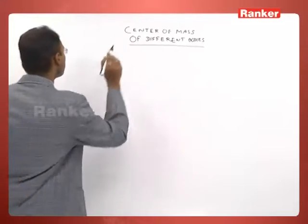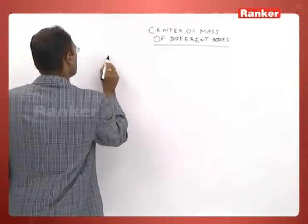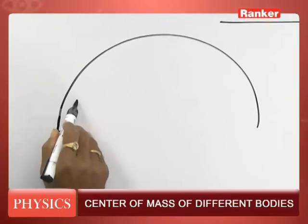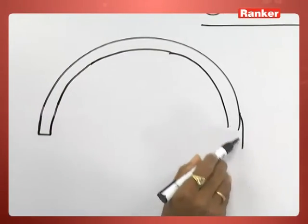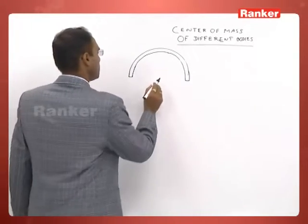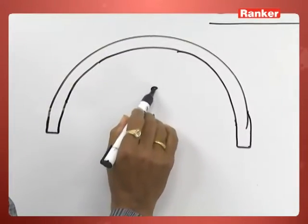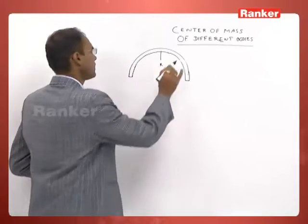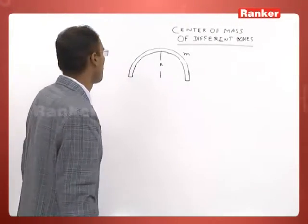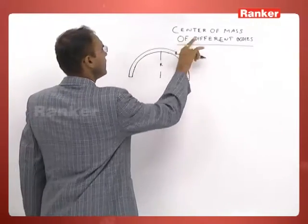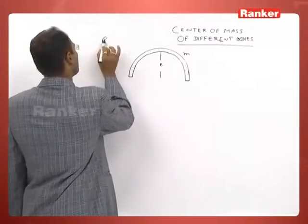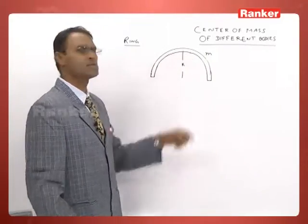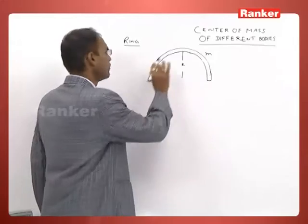For the sake of simplicity, let us take a ring. The radius of the ring let it be R and the mass of the ring you can assume m. How do we find the center of mass of the ring? Needless to mention, the ring is uniform, having uniform mass distribution.